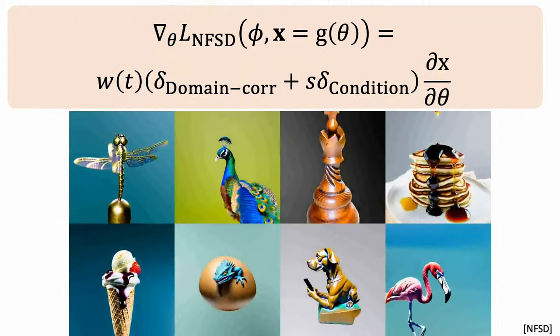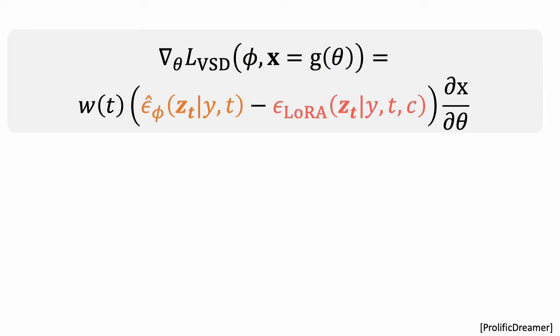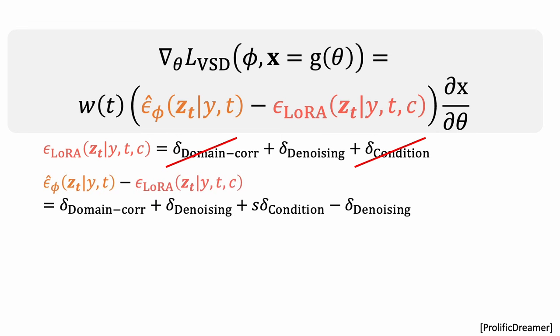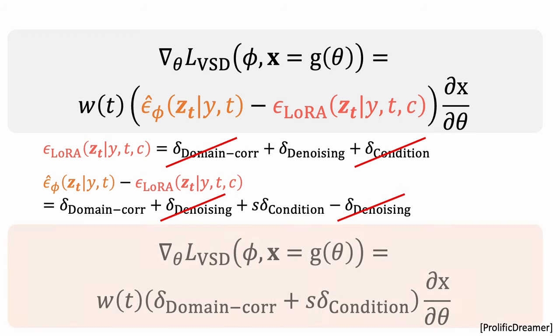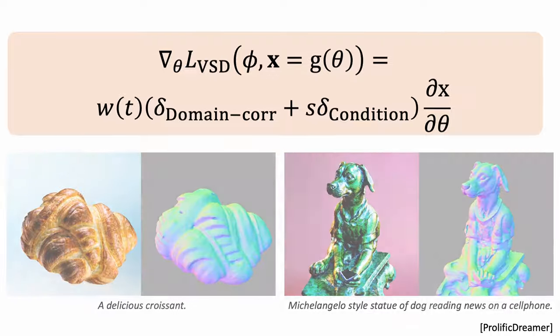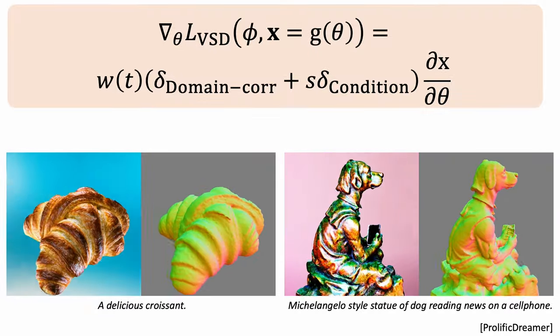We can also use this insight to explain how other methods work. Here we have the variational score distillation update. It computes a noise residual between the estimated noise from the conditional model and the LoRA model. Due to the fine-tuning, the estimated noise from the LoRA model does not have domain-correction and conditional components. The noise residual thus only consists of components that make the content realistic and align with the text prompt. These are the results of Prolific Dreamer.